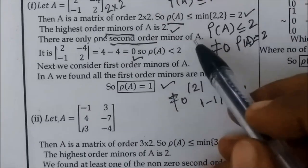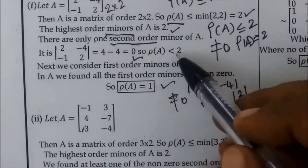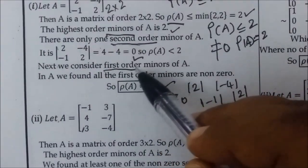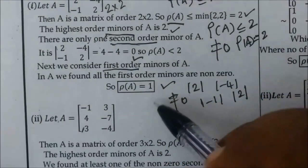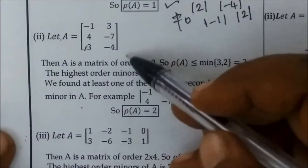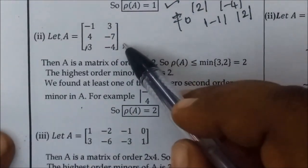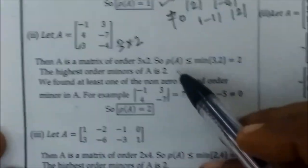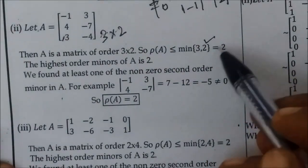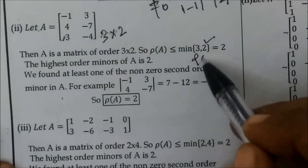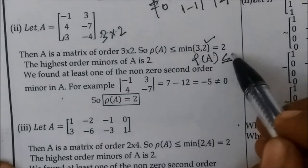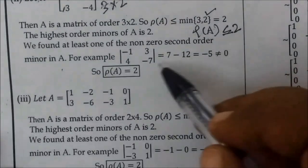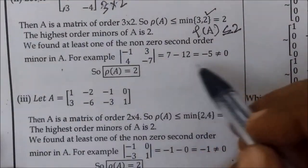So rho of A is equal to 1. There are 2 columns, so we get 2. Rho of A is equal to 2. The determinant is the same order. If we get 0 into 0, that's how we determine the rank. If we get 2 rows, we get 4 rows.